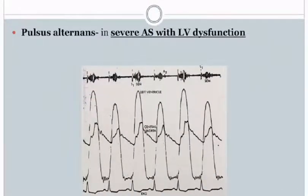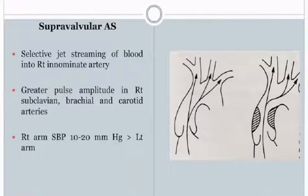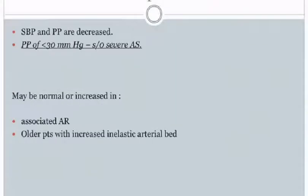Pulsus alternans, visible on tracings, is present in patients with severe aortic stenosis with LV dysfunction. In supravalvular aortic stenosis, selective jet streaming of blood into the right innominate artery causes greater pulse amplitude in the right subclavian, right brachial, and right carotid arteries, with right arm BP typically 10 to 20 mmHg more than the left arm.